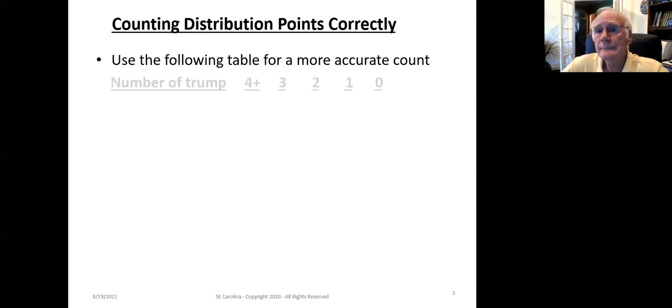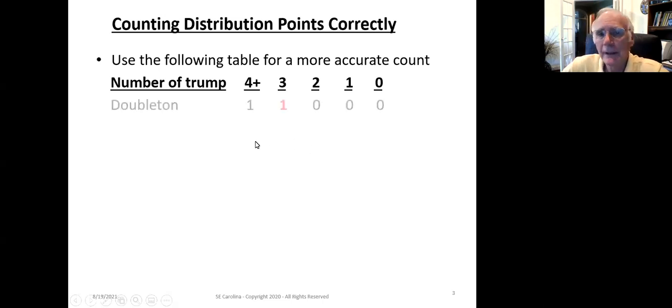Let's go ahead and look at the following table to get a more accurate count on the number of distribution points that you should be counting as a result of having distribution after your partner has indicated a suit. Now, across the top here, we have 4 plus is the number of trump in the suit, then 3, 2, 1, or 0. I'm going to belabor the obvious just to make sure that we all understand it.